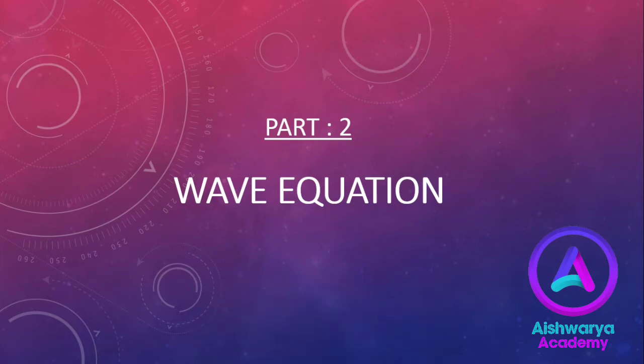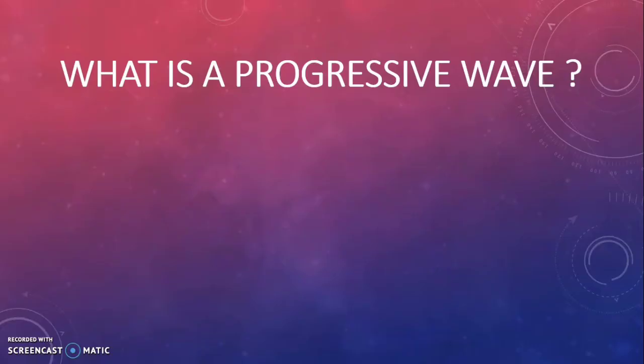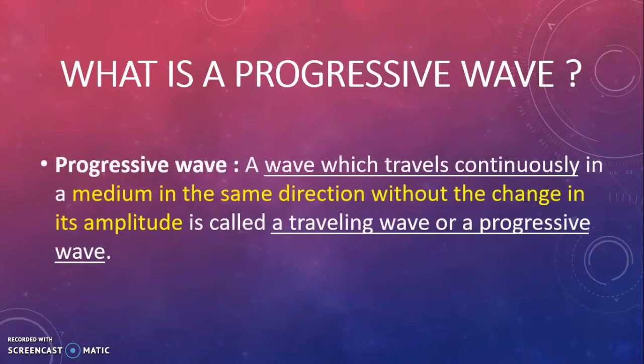A wave which travels continuously in a medium in the same direction without change in its amplitude is called a traveling wave or a progressive wave. If during the propagation of a progressive wave the particles of the medium perform simple harmonic motion about the mean position, then the wave is known as a harmonic progressive wave. A progressive wave may be transverse or longitudinal in nature.